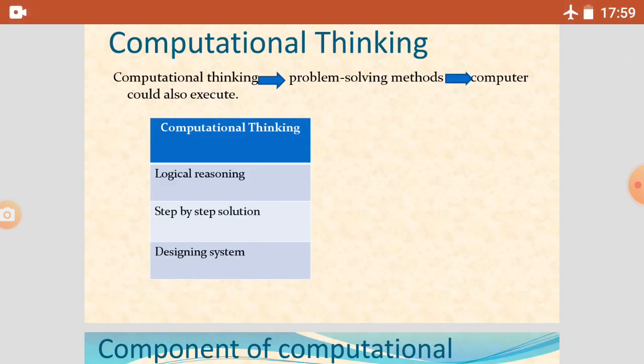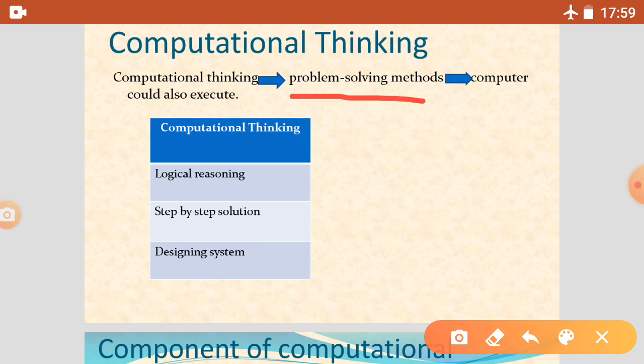What is computational thinking? Computational thinking is a problem-solving method, the same way a computer executes and solves problems. In computational thinking, we solve the problem like a computer scientist. So it is a problem-solving method, as a computer also executes. This is the definition of computational thinking.